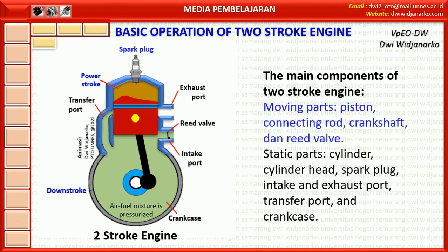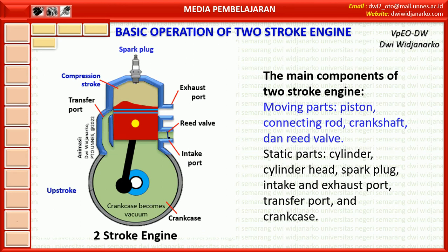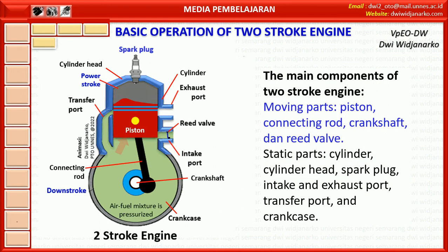The piston serves to compress the air in the cylinder or combustion chamber and receives the pressure resulting from combustion. The piston also directs the air and fuel mixture from the transfer port so it flows to the top of the combustion chamber, pushing exhaust gases out through the exhaust port. The connecting rod transmits force from the piston to the crankshaft. The crankshaft receives that force and converts it into rotation. The reed valve opens the intake port when a vacuum occurs in the crank case, allowing the air-fuel mixture from the carburetor or injection system to enter the crank case, and closes when pressure in the crank case rises as the piston goes down.